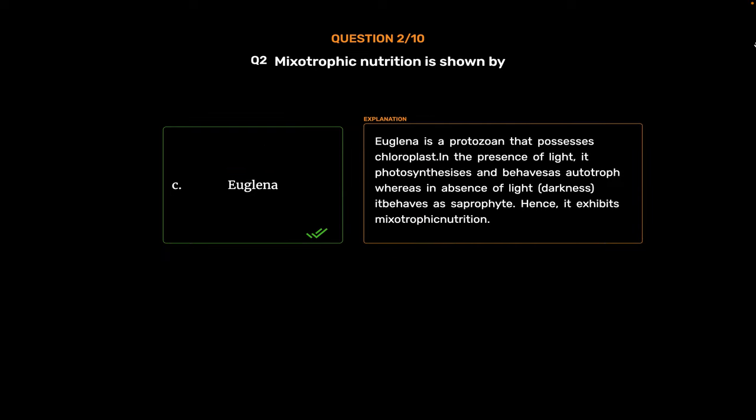Euglena is a protozoan that possesses chloroplast. In the presence of light, it photosynthesizes and behaves as an autotroph, whereas in the absence of light, in darkness, it behaves as a saprophyte. Hence, it exhibits mixotrophic nutrition.